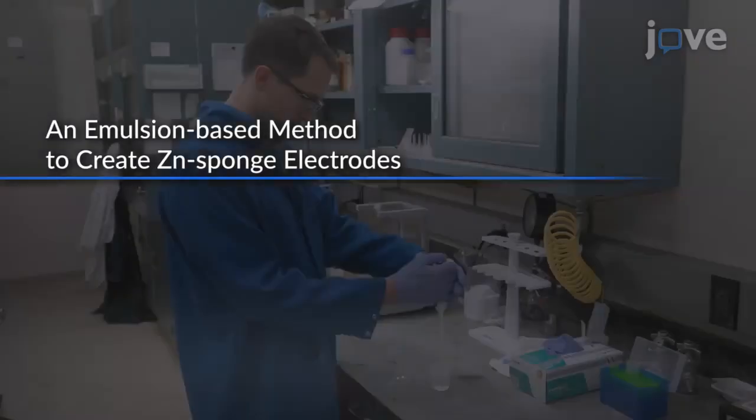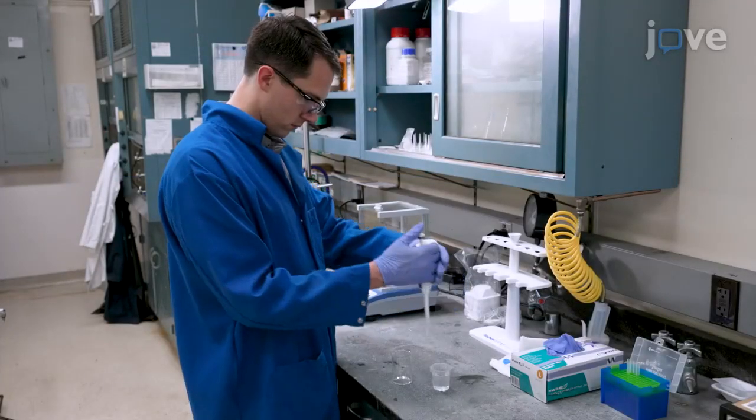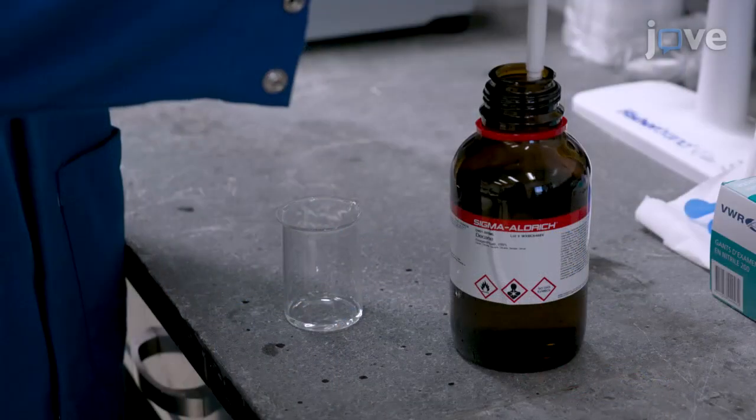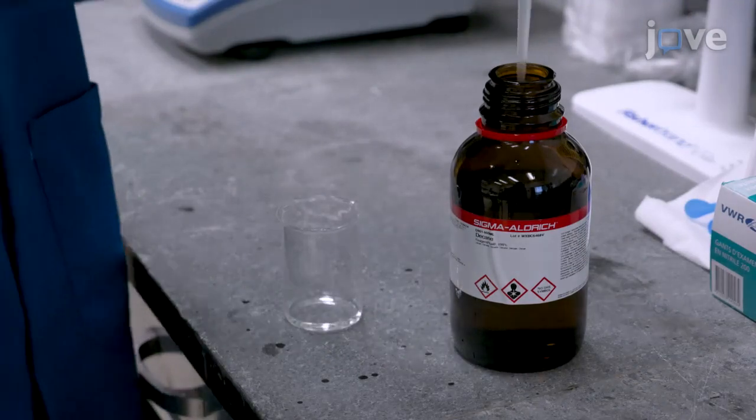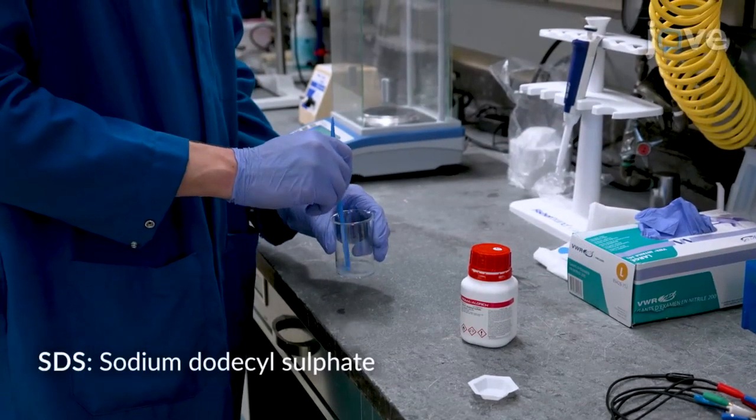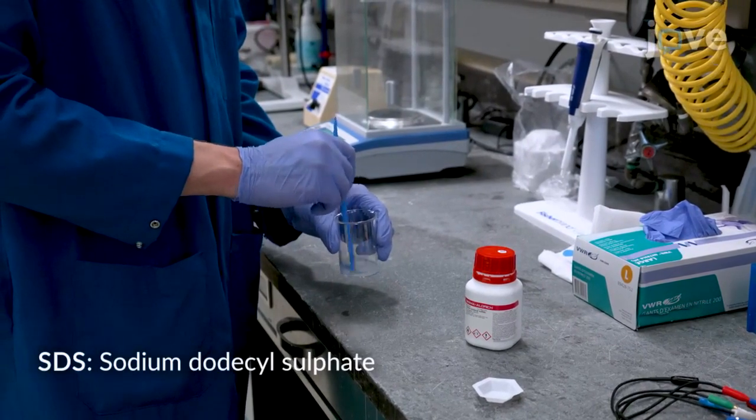Begin by adding 2.054 milliliters of deionized water and 4.565 milliliters of decane to a 100 milliliter glass beaker. Then, dissolve 0.1 gram of SDS by stirring the solution.